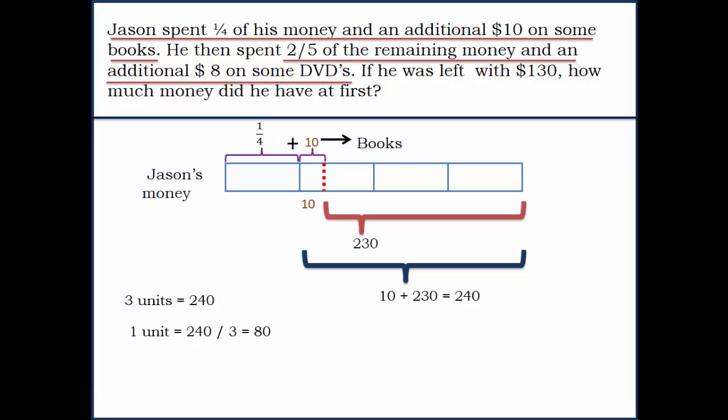How much money did he have at first? He had four units at first, which means four units equals 80 times 4, which is 320. Jason at first had $320. That's the answer using the Singapore model method.